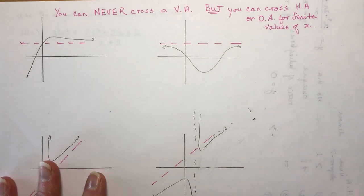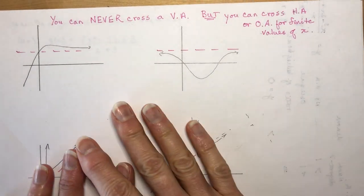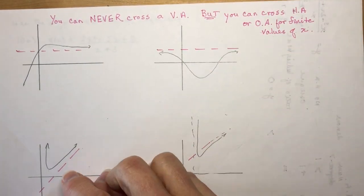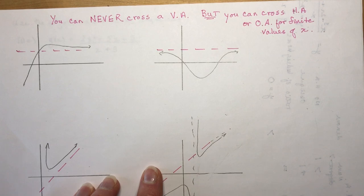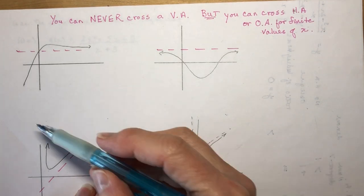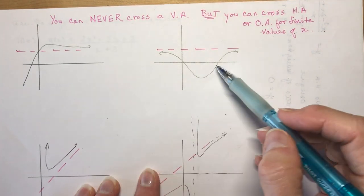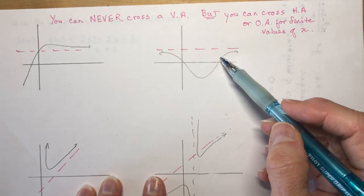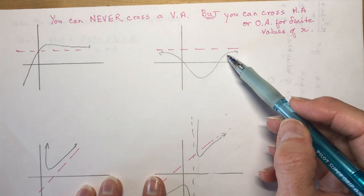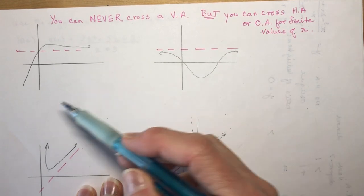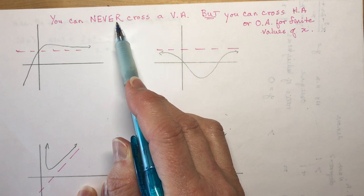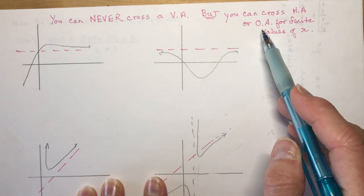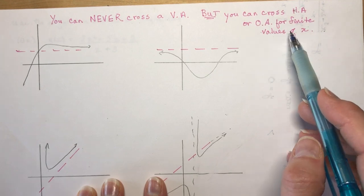This is a continuation of 4.3. There was just one section I wanted to make sure you understood completely, and that is how you approach a horizontal asymptote. You can approach a horizontal asymptote from above or from below, and all you would do is plug in some values as you approach infinity to see whether you're above or below this asymptote. Remember that you can never cross a vertical asymptote, but you can cross a horizontal or oblique asymptote for finite values of x.